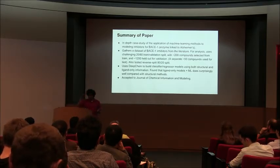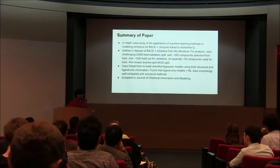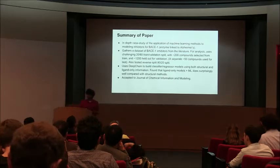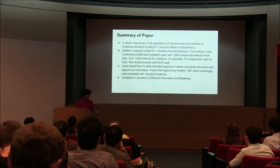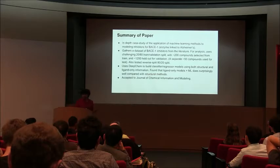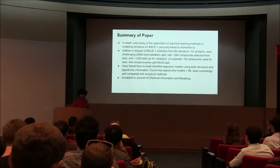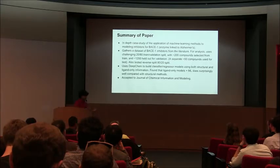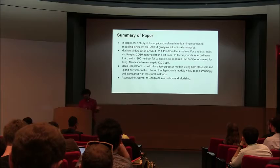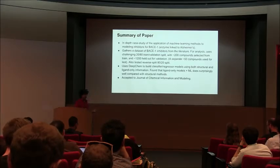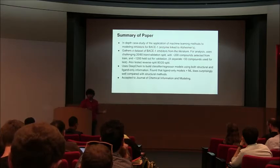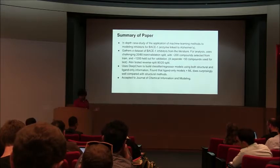The first paper is a joint collaboration with Pfizer, with the goal of modeling inhibitors of the BACE-1 enzyme — an enzyme linked to Alzheimer's. We scraped a lot of papers available on the internet and found something like 1,000 inhibitors reported in the literature. Rather than the usual 80-20 split for training and testing, we did the opposite: we used only 20% of the data — around 200 compounds — for training, and used the remaining 800 to validate. The question was: can we still do useful things with only 200 data points?